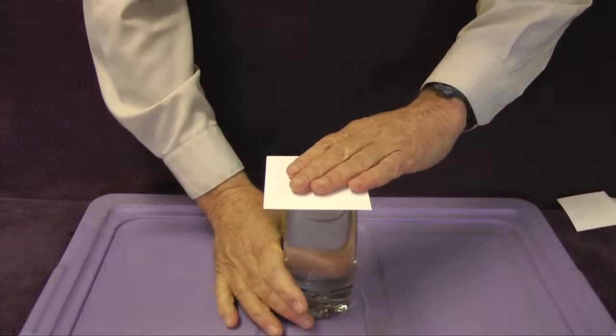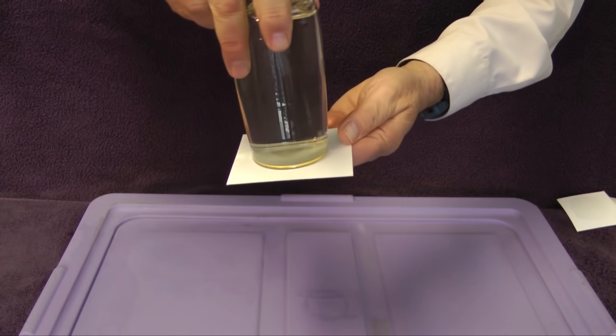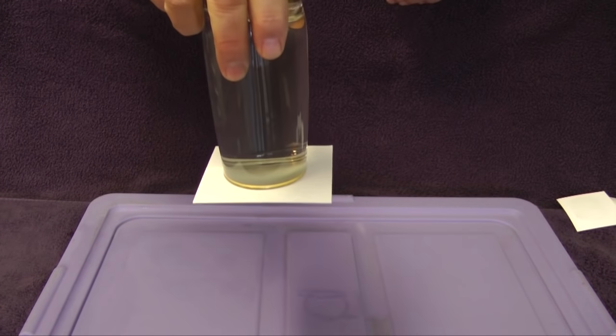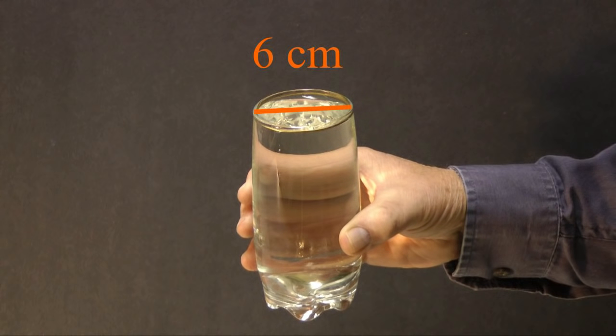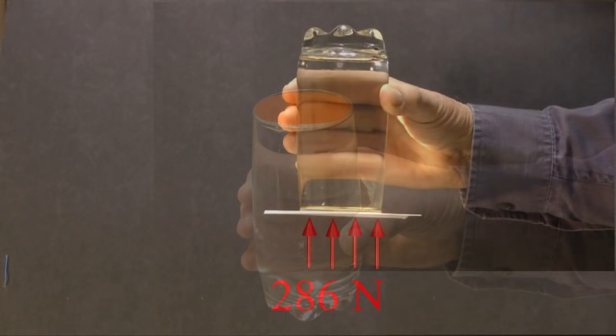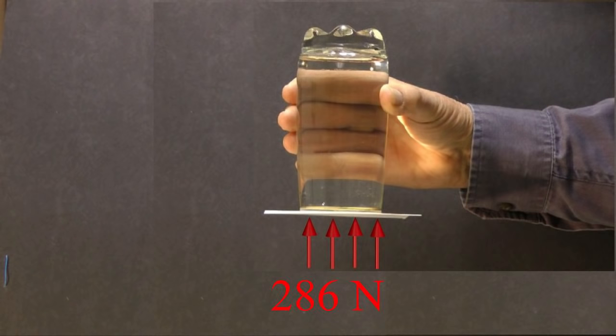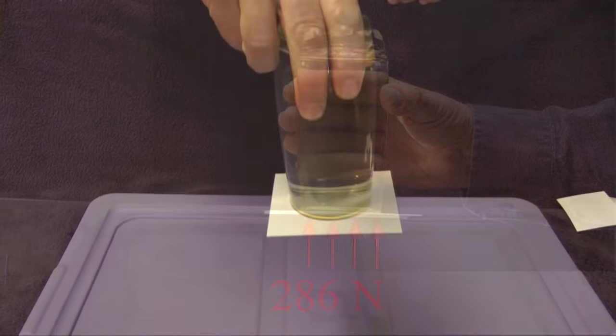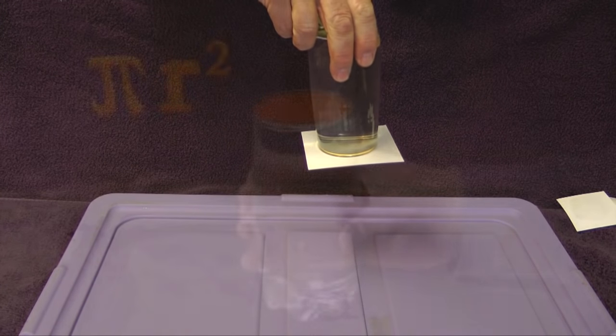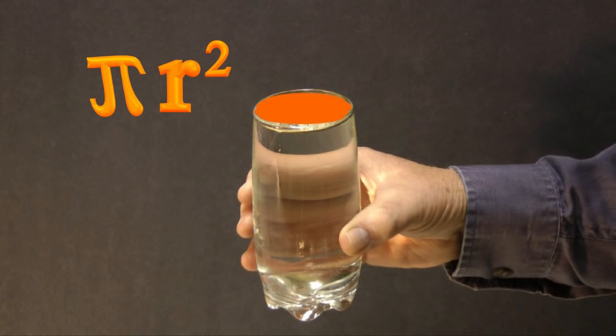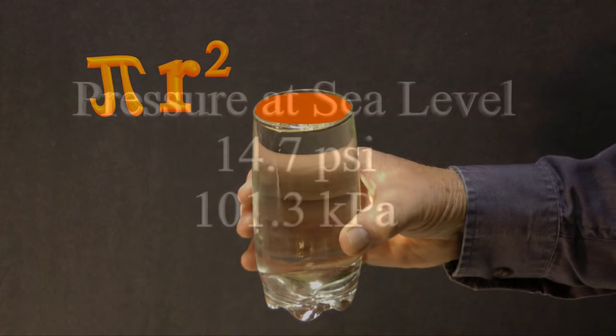The forces involved in our demonstration are impressive. The glass I used has a diameter of 6 centimeters at the open end. The force acting on that small area is an incredible 286 newtons or 64 pounds. Easily enough force to support the water in the glass. To confirm my numbers, calculate the area of the open end of the glass, then multiply by atmospheric pressure.